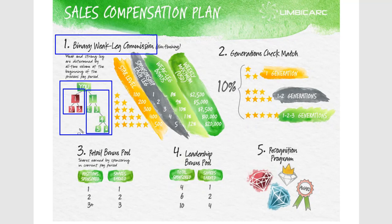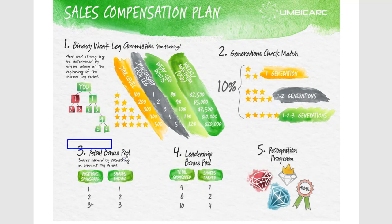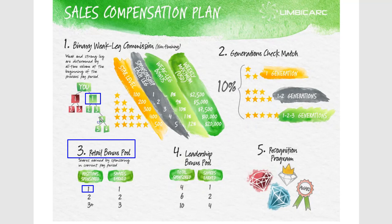There's only two places — it's really simple but extremely powerful. When you get your first customer, you're going to get a share in the retail bonus pool. They'll also end up on your left or your right leg — usually right here. By default, there's a setting in your back office where it just alternates, so the second person would go on your left leg, the third on your right, and it goes back and forth. But let's get back to the retail bonus pool.